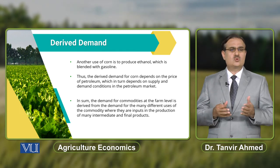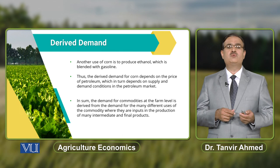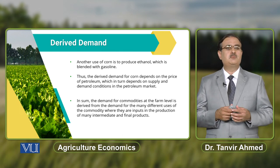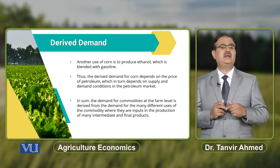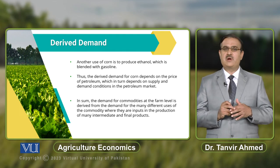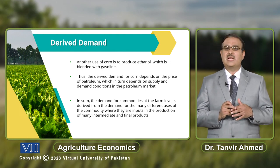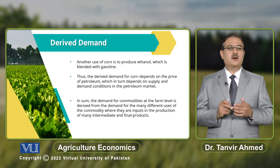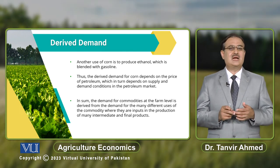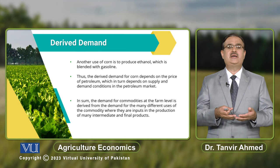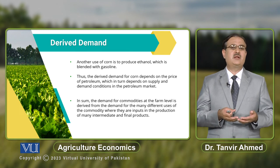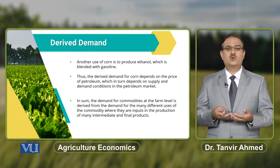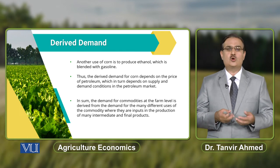If we replicate this with reference to farming inputs — inputs like seed and fertilizer — the demand for farming inputs can also be derived on the basis of demand for agricultural commodities that are produced in an economy.